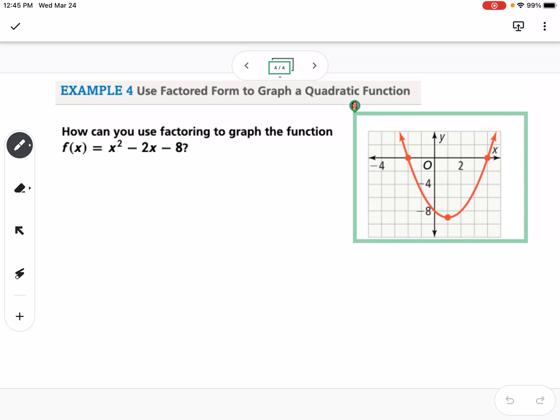My last example here, we're going to look at how can you use factoring to graph the function f of x equals x squared minus 2x minus 8. First of all, I'm going to factor this.